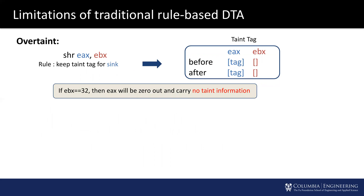Let's look at a simple example of the over-taint issue in rule-based dynamic taint analysis. The taint propagation rule for a common shift instruction is to keep the original taint tag for source and sink. However, if EBX equals 32, the sink will be zeroed out and no longer carry any taint information. The static rule cannot consider program context and leads to an over-taint.